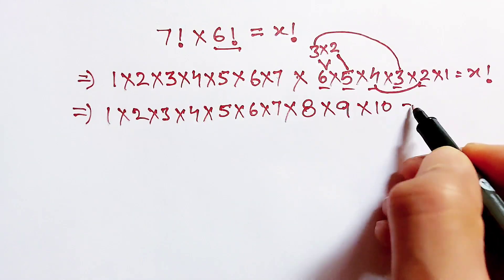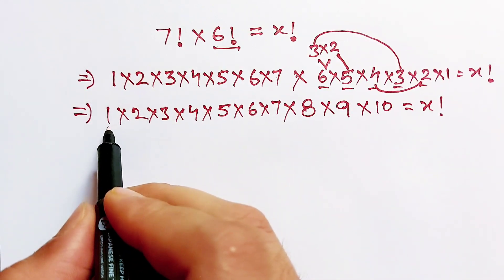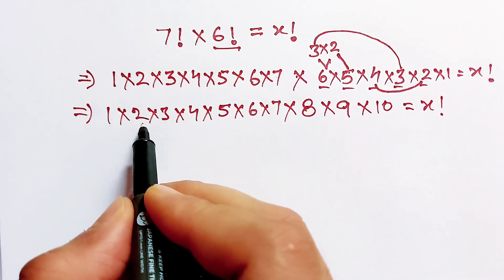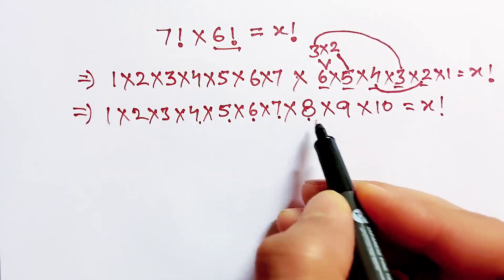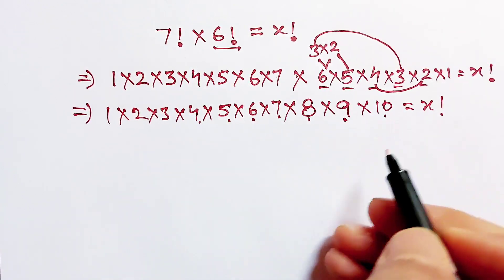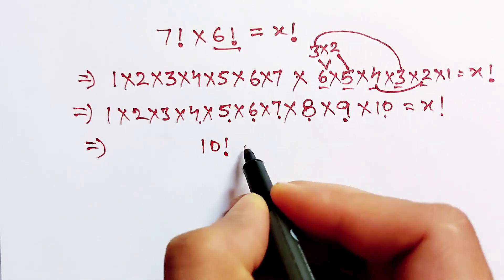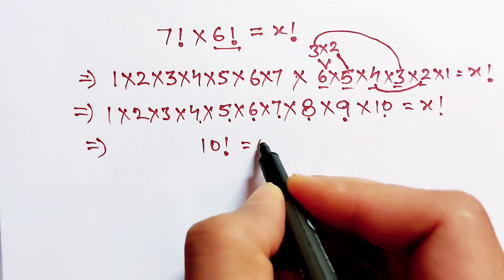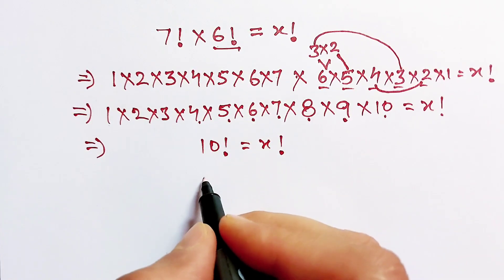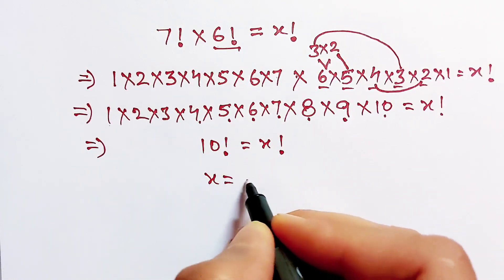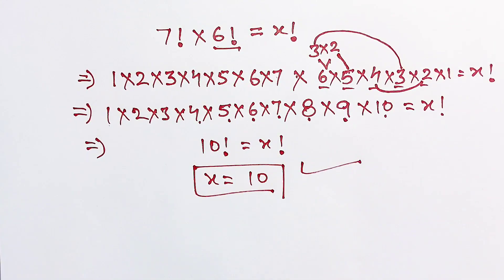This gives us 1×2×3×4×5×6×7×8×9×10, which equals 10 factorial, and this is equal to x factorial. Therefore, the value of x is equal to 10, and that is our answer.